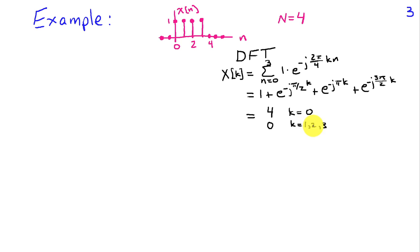When k is 1, 2, or 3, then these terms cancel each other exactly. And when k is equal to 1, I have 1 here, and then I have e to the minus j pi, which is minus 1. So those cancel. And then I have e to the minus j pi over 2, and e to the minus j 3 pi over 2. Again, those cancel. So the DFT of this signal is very straightforward. It's 4 at k equals 0, and it's 0 elsewhere.